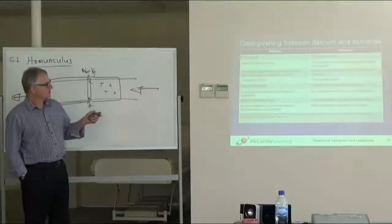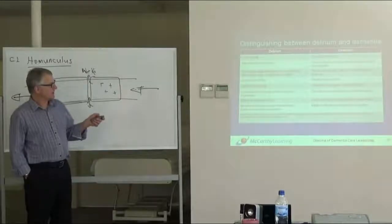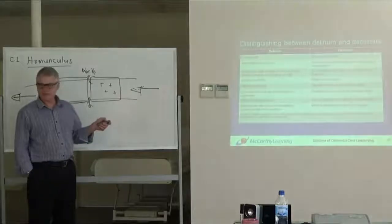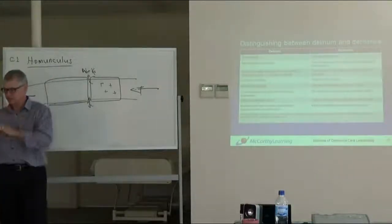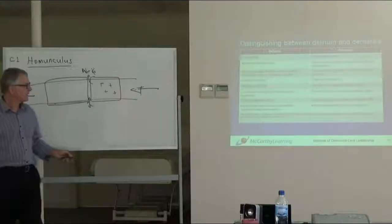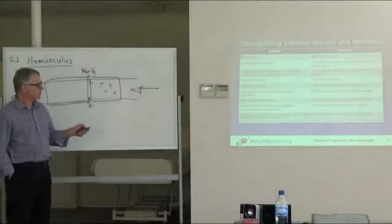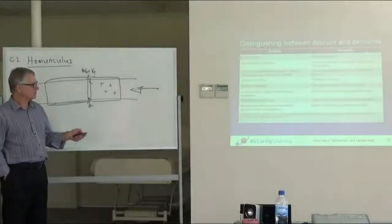So here we've got acute onset versus gradual onset, identifiable time of onset versus what they call insidious onset. The word insidious simply means it's hidden and it happens slowly. The cause is usually treatable in a delirium but not treatable in dementia.